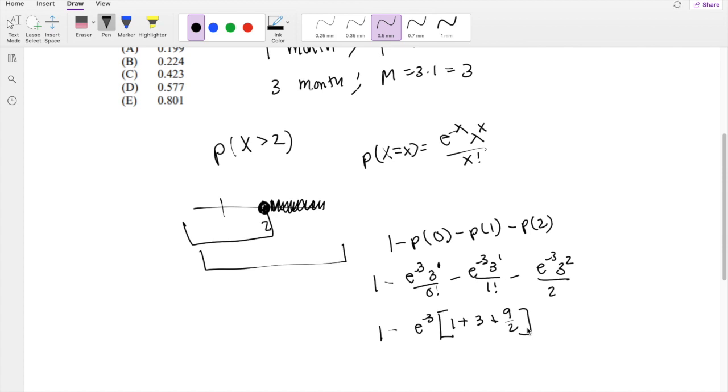Because on the exam, you want to spend as little time typing into the calculator as possible, since it's a time crunch test. 1 plus 3 plus 9 over 2. So I got 0.5768, which is approximately 0.577, which is answer D.